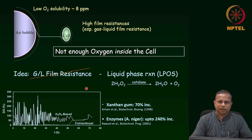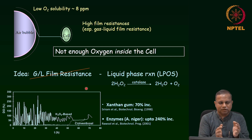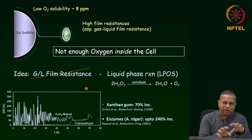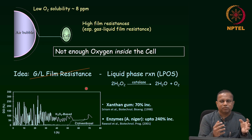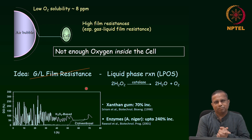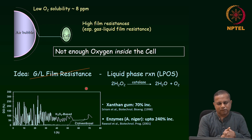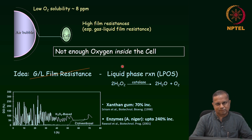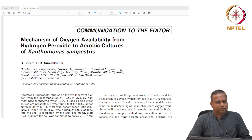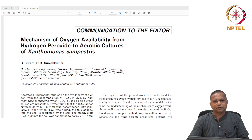Now let me get to the next aspect, which is rather interesting. The initial part involves transport, and there is transport in the mechanistic aspects also — I will let you figure out what those transport aspects are. The mechanism was completely surprising to us; whatever assumptions we started out with completely went out of the window when we started investigating the mechanism by which the oxygen becomes available. Let us discuss this paper today: 'Mechanism of oxygen availability from hydrogen peroxide to aerobic cultures of Xanthomonas campestris.'